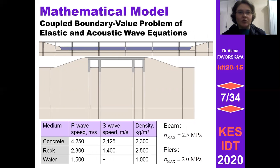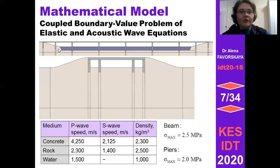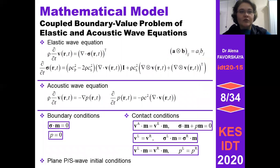Let's start from our mathematical model. Here we can see our bridge, and there are three types of materials: concrete, rock, and water. We use different separated meshes for different materials. In the case of water we solve the acoustic wave equation, and in the place of concrete and geological rock surrounding our bridges we solve the elastic wave equation. These lead to two systems of equations.